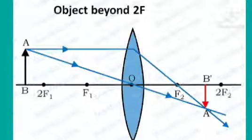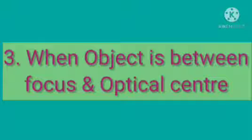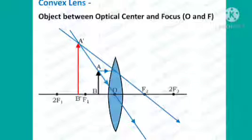Third, when the object is placed between the focus and the lens, i.e. optical center of the lens, then the image formed is virtual, erect, magnified, and on the same side as the object.